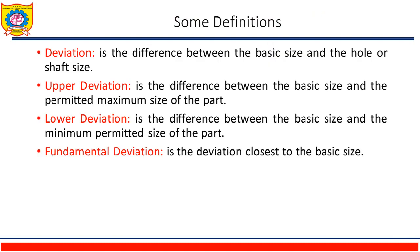Some definitions from the figure: Deviation is the difference between the basic size and the hole or shaft size. Upper deviation is the difference between the basic size and the permitted maximum size of the part. Lower deviation is the difference between the basic size and the minimum permitted size of the part. Fundamental deviation is the deviation which is closest to the basic size of the component. These definitions can be well understood by properly studying the figure.